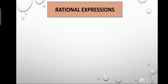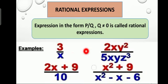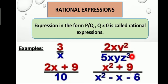There are also rational expressions present as algebraic expressions. A rational expression is an expression in the form p/q, where q is not equal to 0. Examples include 3/x or 2xy² ÷ 5xyz³, which are in p/q form — p representing the numerator and q the denominator. Every polynomial can be regarded as a rational expression since we can write p(x) as p(x)/1. However, every rational expression need not be a polynomial.